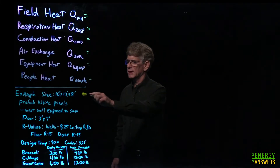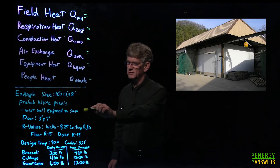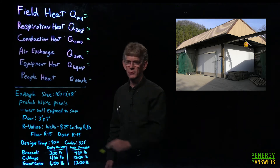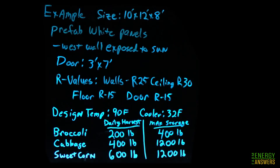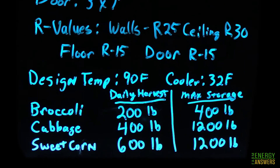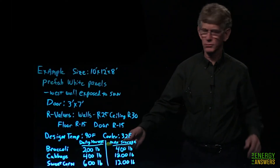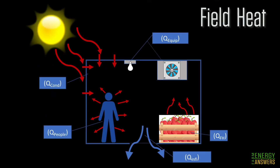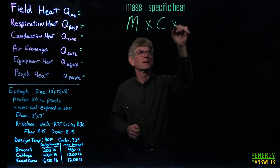To help us understand this, we're going to use an example. The example is a 10 by 12 by 8-foot-high cooler made of prefab white panels. The west end is exposed to the sun; the rest is within a building. It has a 3 by 7-foot door. We have R-values for the panels, and our design temperature — typically worst case — will maintain 32 degrees inside, because we're storing broccoli, cabbage, and sweet corn, which are best kept at that temperature.